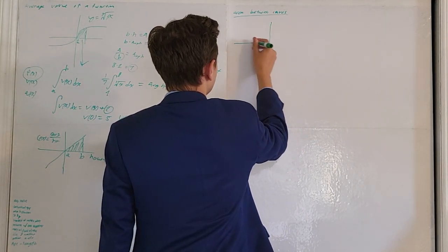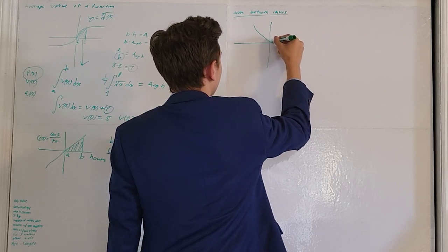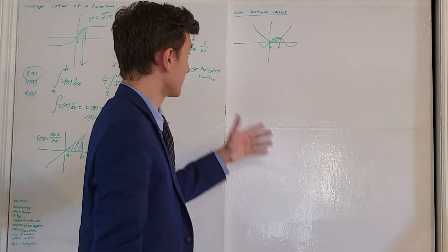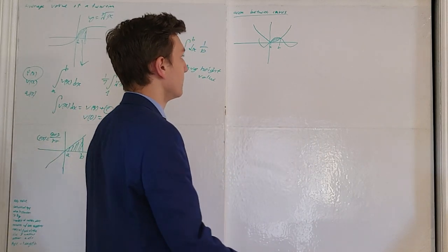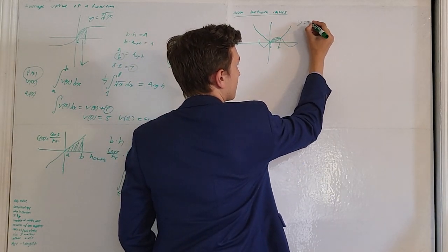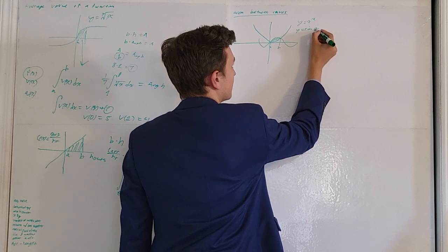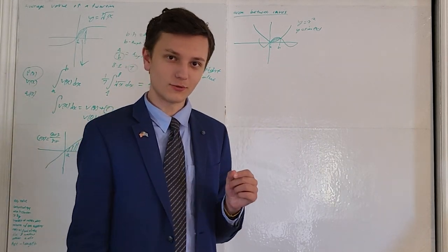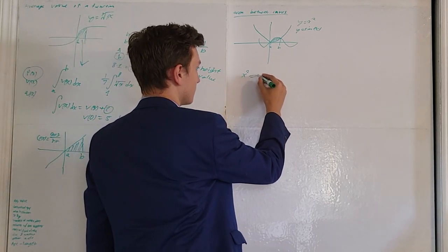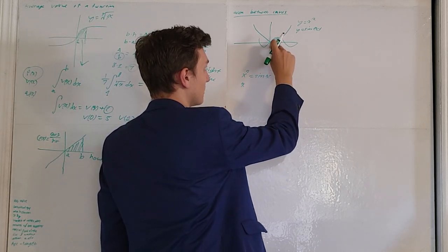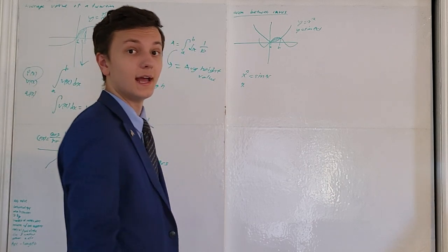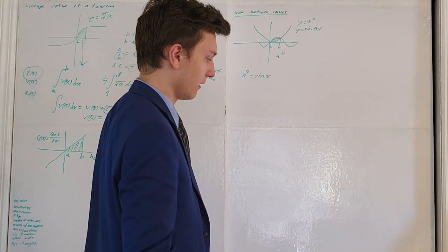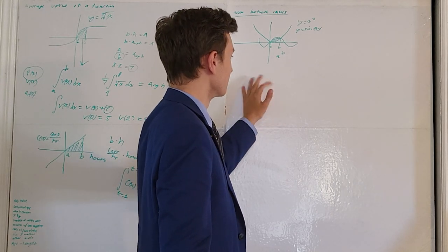If I gave you two functions — y equals x squared and y equals sine x — the first step is always identifying what your a and b are, but you're not given them. You see that a and b are the points of intersection between the two graphs. So you set x squared equal to sine x and solve for x — find where the graphs intersect — and those are your bounds of integration.